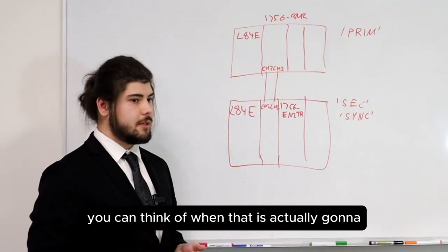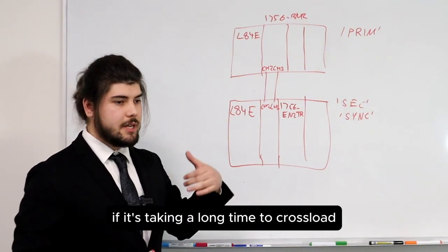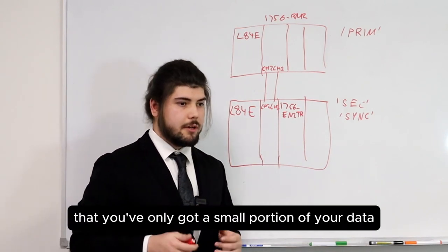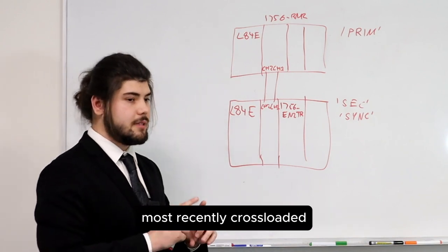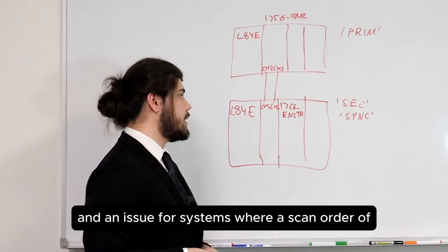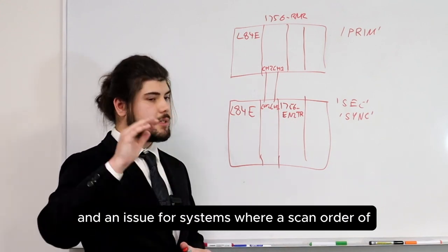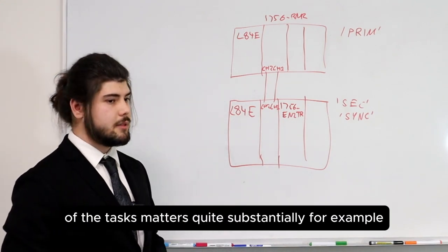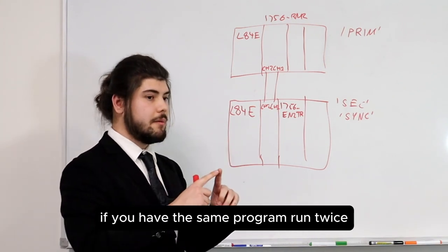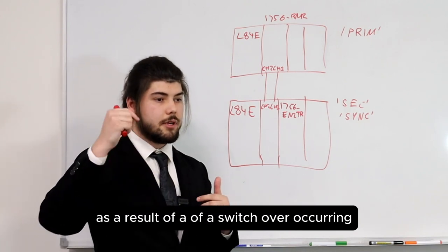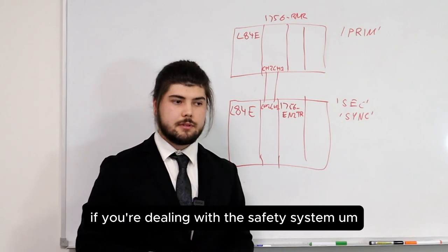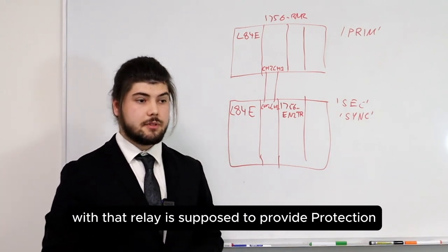The program's memory organization matters when approaching a switchover event. If it's taking a long time to cross-load and a switchover event occurs in the middle, you've only got a small portion of your data most recently cross-loaded. That can be a big issue for systems where timing or scan order of tasks matters substantially. For example, you could be closing and opening a relay if the same program runs twice as a result of a switchover — which would be a massive issue if you're dealing with a safety system where that relay is supposed to provide protection.